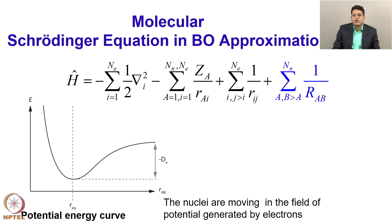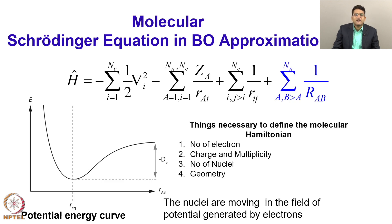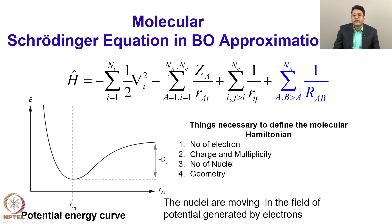To define the molecular Schrödinger equation in the Born-Oppenheimer approximation, what information is necessary? First, the number of electrons. Second, charge and multiplicity — charge tells me how many electrons I have; for example, H2 has two electrons but H2+ has one. Multiplicity tells us which spin state we are solving; for example, oxygen with eight electrons can be both singlet and triplet, and the ground state of oxygen is actually triplet. Third, the number of nuclei, because I have a summation over nuclei. And fourth, the geometry — the constant value R_AB. If I have these four pieces of information, I can write down the molecular Hamiltonian and solve it — of course, not by hand but by computer.